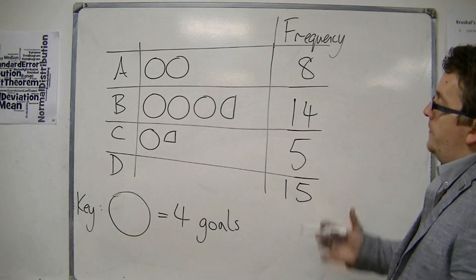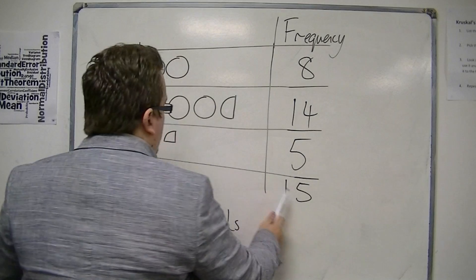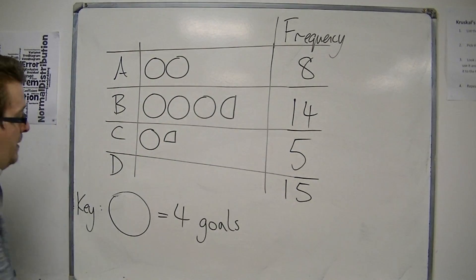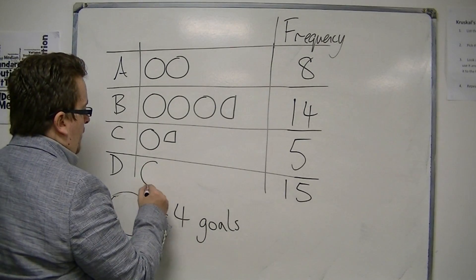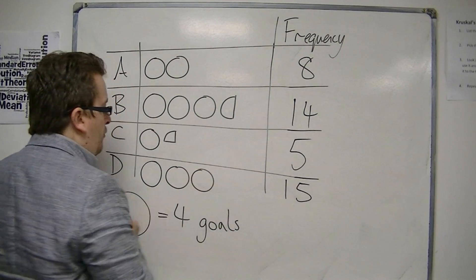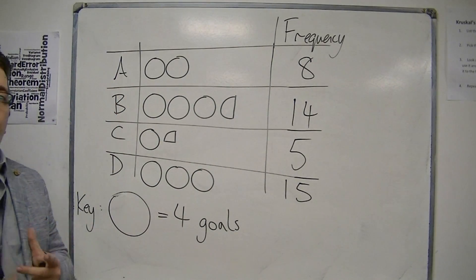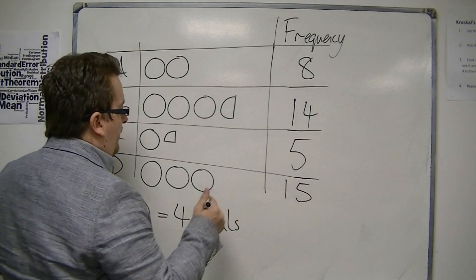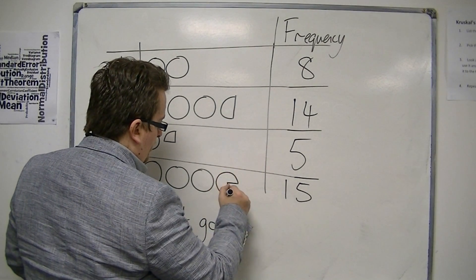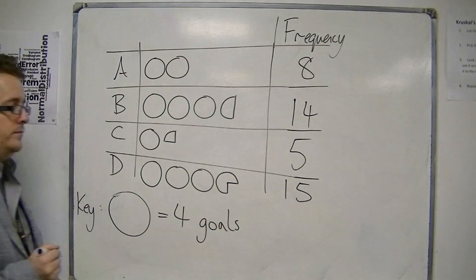And then the last thing we need to do to complete the pictogram is to fill in what fifteen goals would be represented by using this symbol. So we would have four goals, eight goals, twelve goals, and then we need to represent three goals. So it's going to have to be three quarters of a circle, like that.